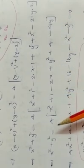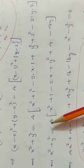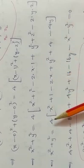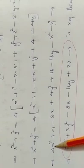So x squared plus y squared equals 4 into x squared plus 1 minus 2x plus y squared plus 4 minus 4y. Multiplying 4 inside: 4x squared plus 4 minus 8x plus 4y squared plus 16 minus 16y. Shifting x squared and y squared to the right side gives minus x squared minus y squared equal to 0.